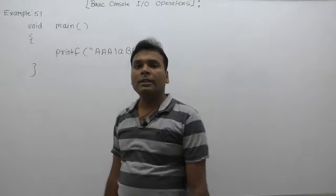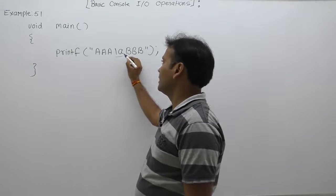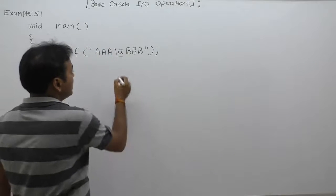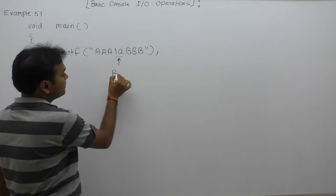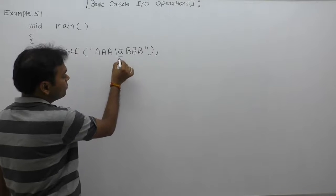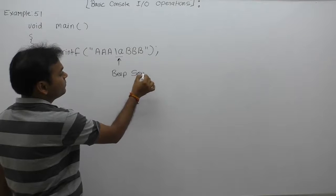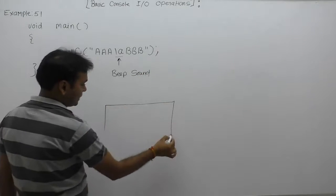Next, we are using another escape sequence character called slash a. As we discussed during escape sequence character, slash a simply represents beep sound. Whenever this character is going to be executed, it will generate some beep sound. Let's see the result or output of the program.